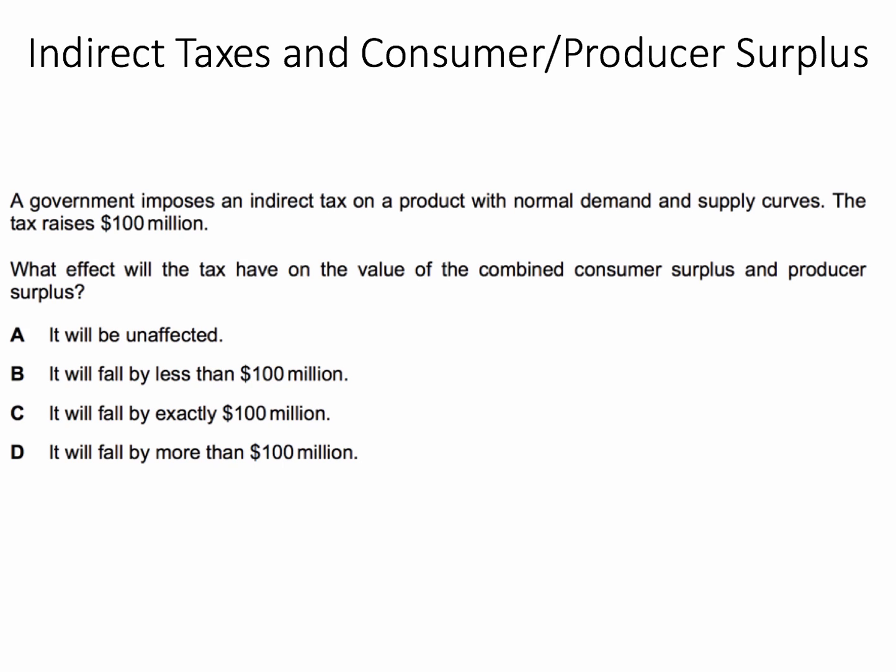I hope you did draw a diagram. It's one of those questions where a diagram in the exam will be handy to make sure you get the right answer. The correct answer to this question is D — it will fall by more than $100 million. Let's have a look at why.